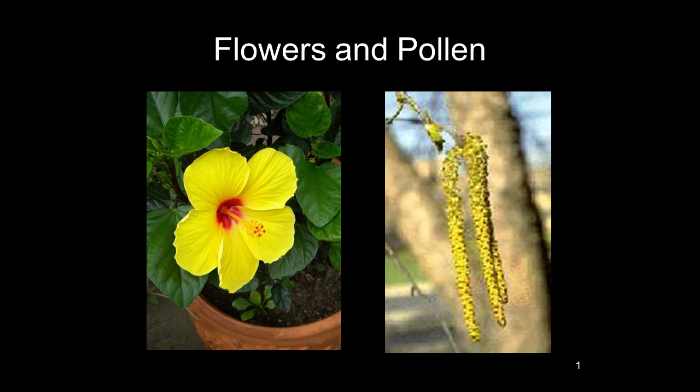These bright petals help attract the insects. On the other side is a wind pollinated flower. This hanging flower is a cluster of hundreds of tiny flowers, and they produce enormous numbers of pollen that is light and easily distributed by the wind.